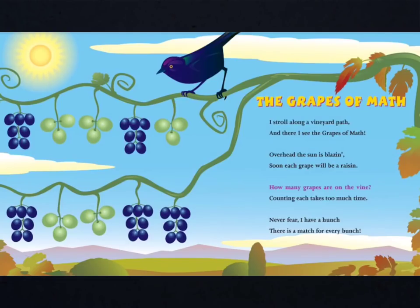The Grapes of Math. I stroll along a vineyard path, and there I see the Grapes of Math. Overhead, the sun is blazing. Soon each grape will be a raisin. How many grapes are on the vine? Counting each takes too much time.